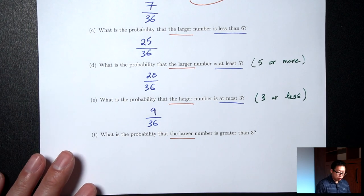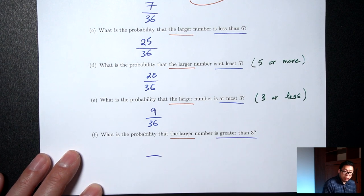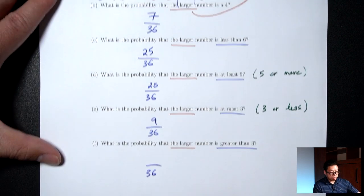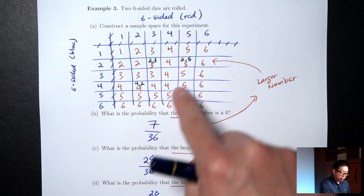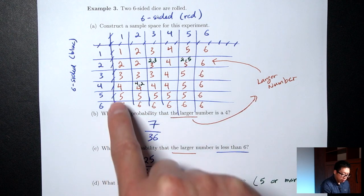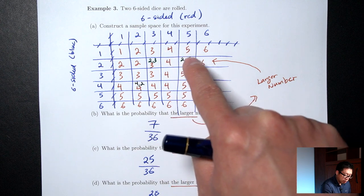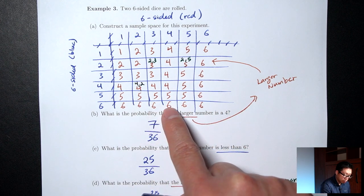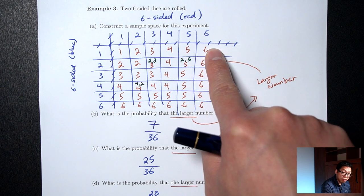Part F: What's the probability the larger number is greater than 3? Bottom is still 36. Greater than 3 includes all 4s, 5s, and 6s. Counting those gives 27. So P(larger > 3) = 27/36.